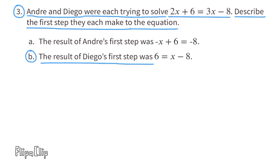B. The result of Diego's first step was 6 equals x minus 8. On the left side of the original equation, it reads 2x plus 6. After his first step, it only reads 6. He must have subtracted 2x. Let's look at the right side of the equal sign. It went from 3x minus 8 and became x minus 8. He subtracted 2x from both sides of the equal sign, which is the same thing as adding a negative 2x to both sides of the equal sign.